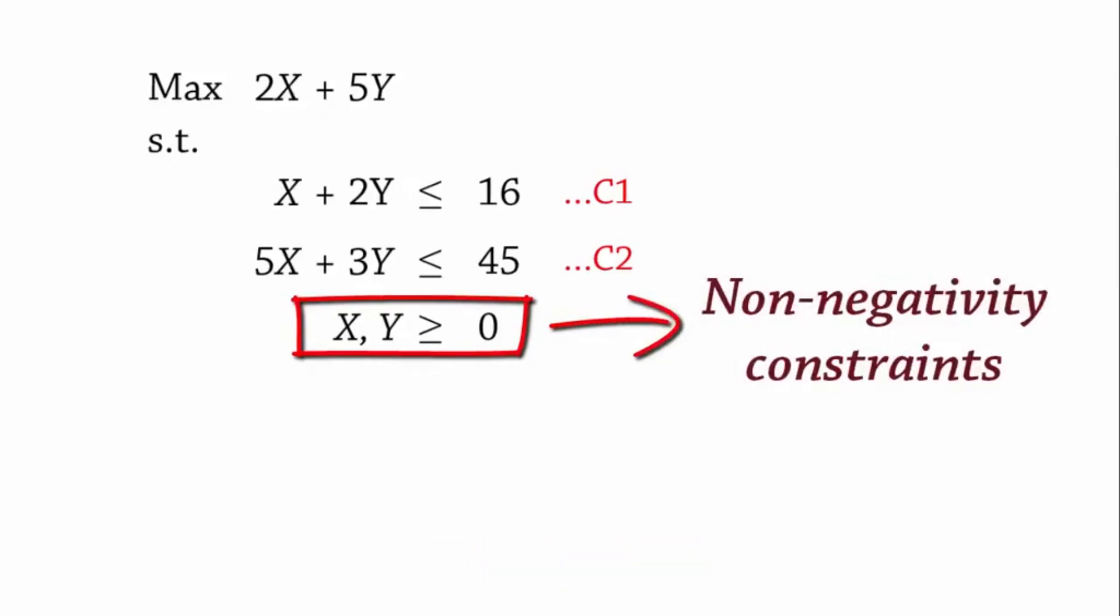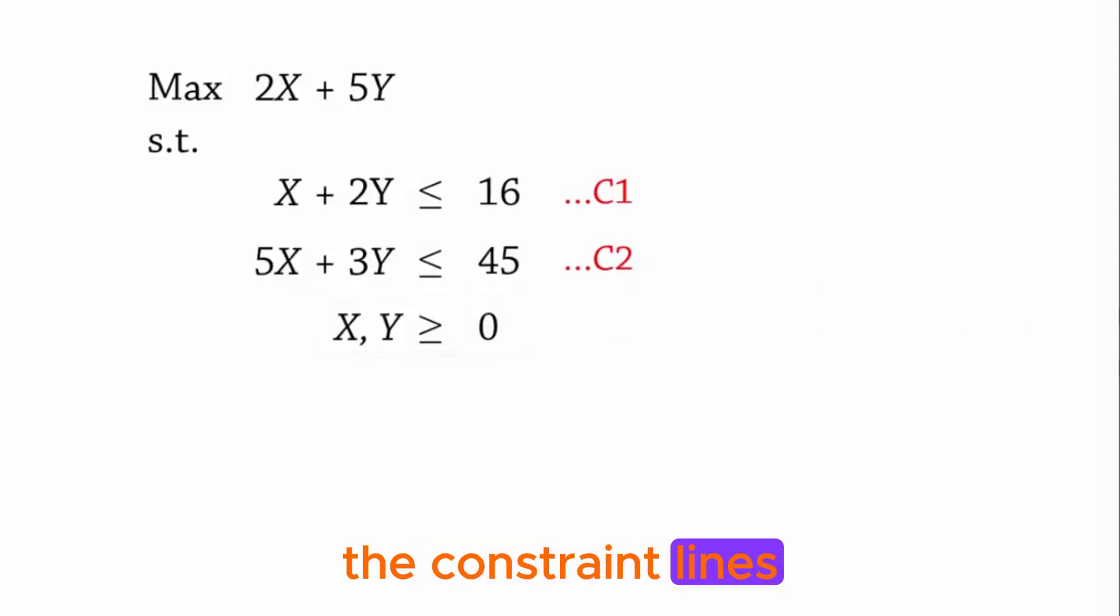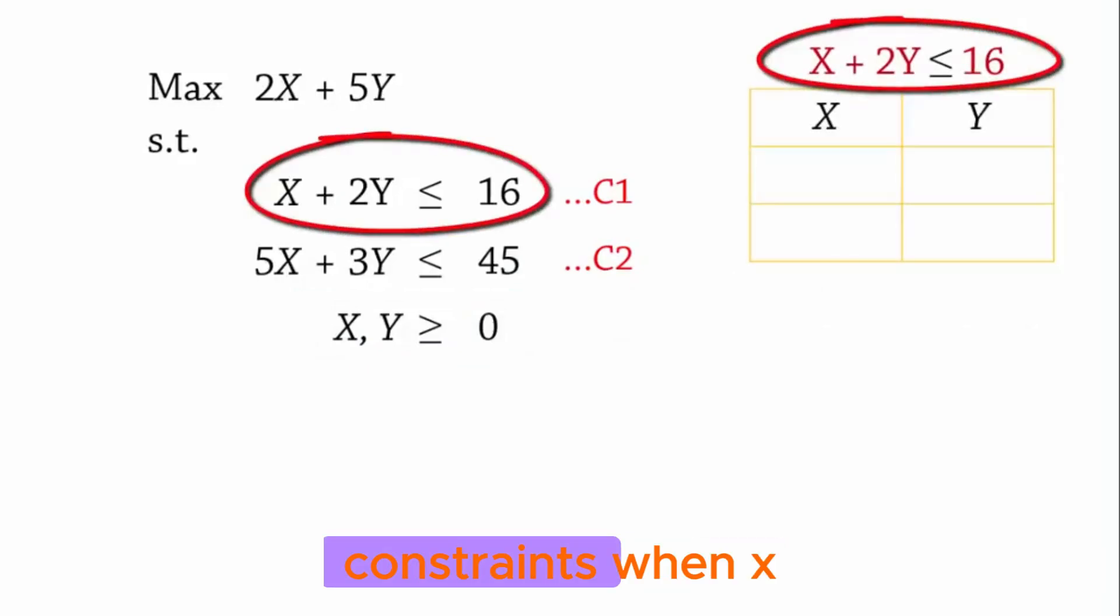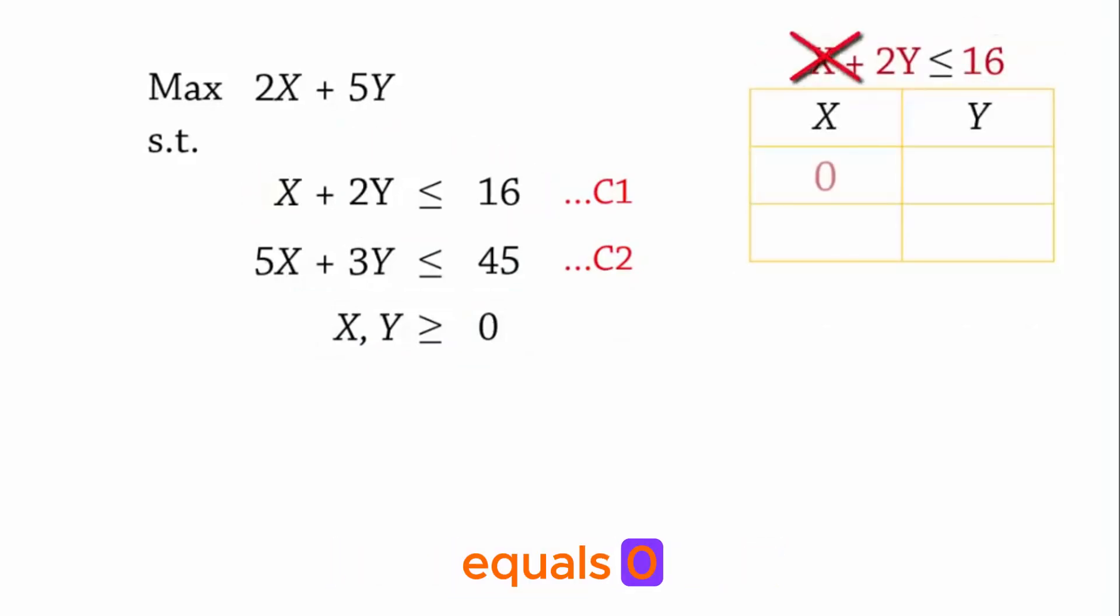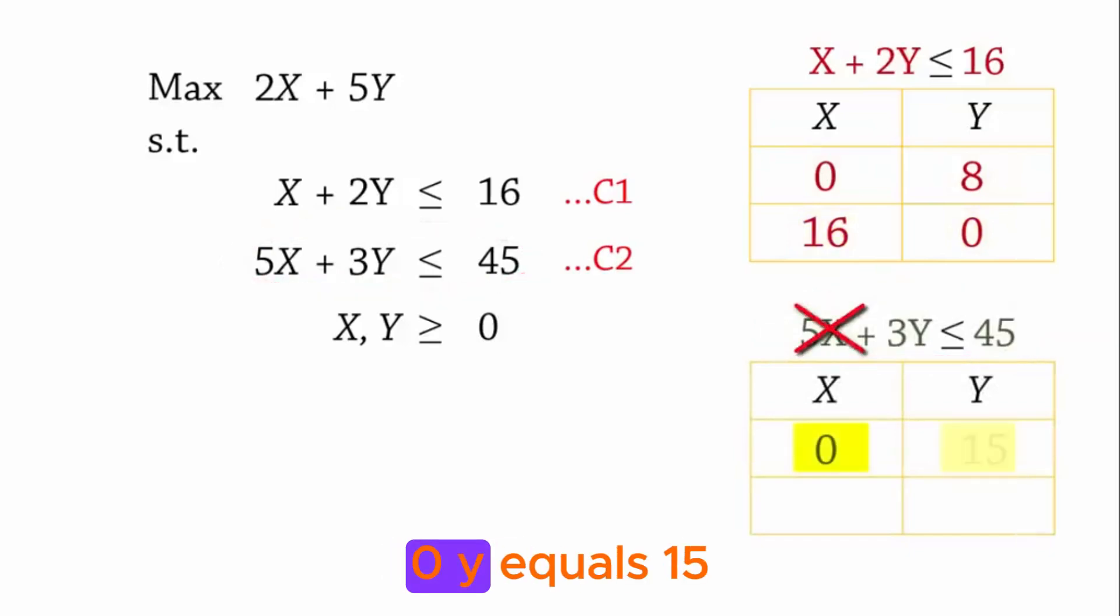To solve the model graphically, we begin by finding points that satisfy the constraint lines. For the first constraint, when X equals 0, Y equals 8, and when Y equals 0, X equals 16. For the second constraint, when X equals 0, Y equals 15, and when Y equals 0, X equals 9.